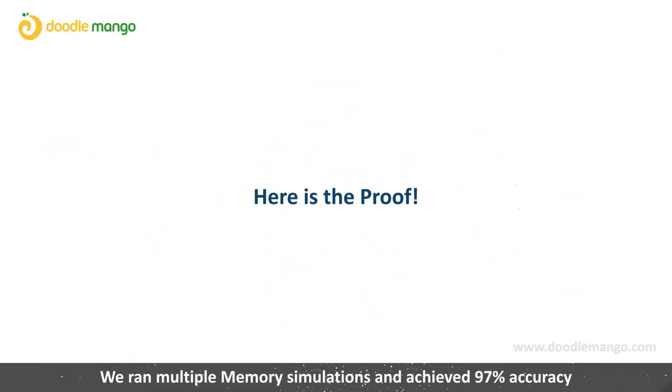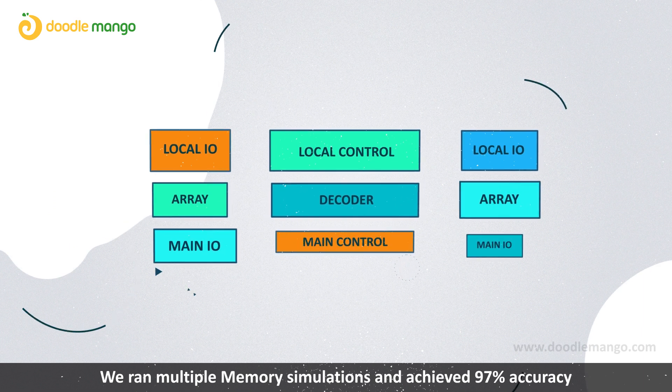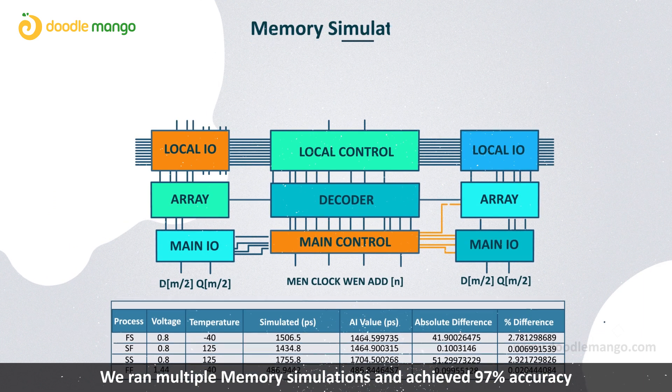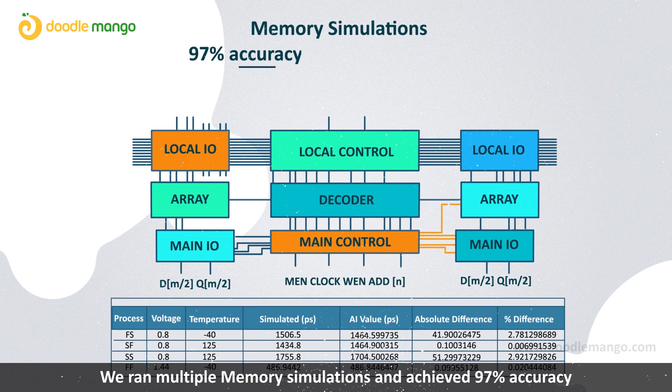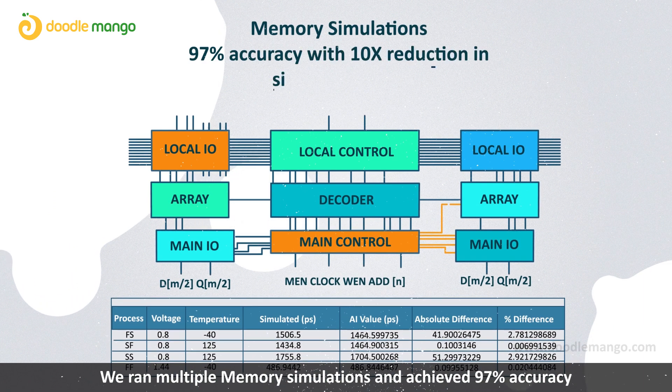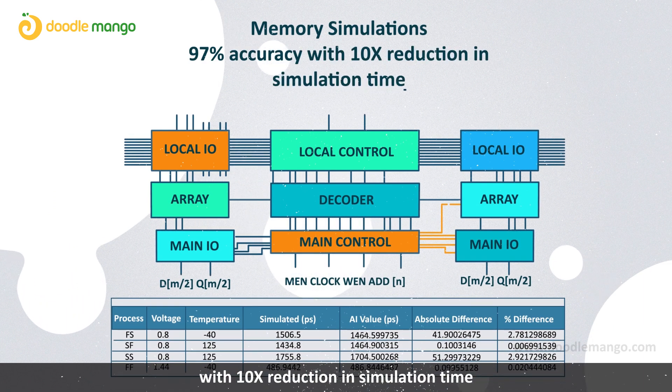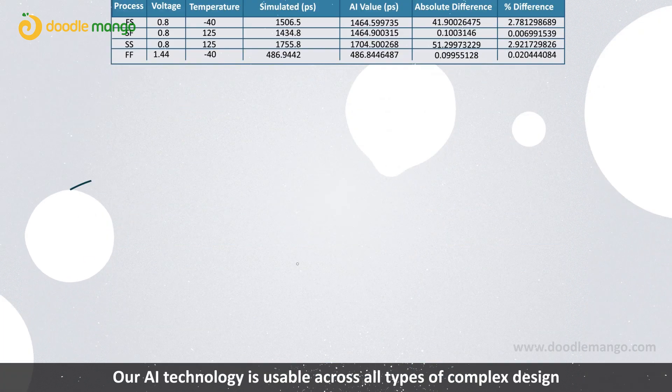Here's the proof. We ran multiple memory simulations and achieved 97% accuracy with a 10 times reduction in simulation time.